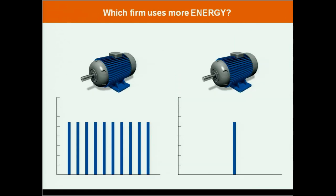Let's move to a commercial and industrial example. Here we have two firms in our simple world that each have a single appliance, in this case an electric motor. The first customer uses that motor ten times a day. The second customer uses that motor once a day.